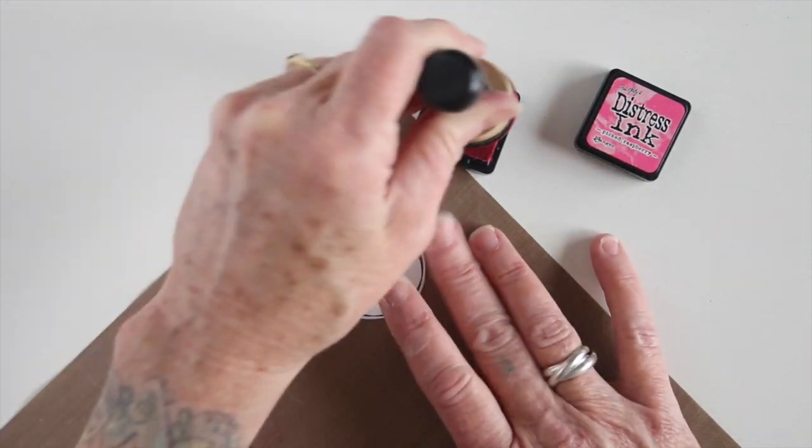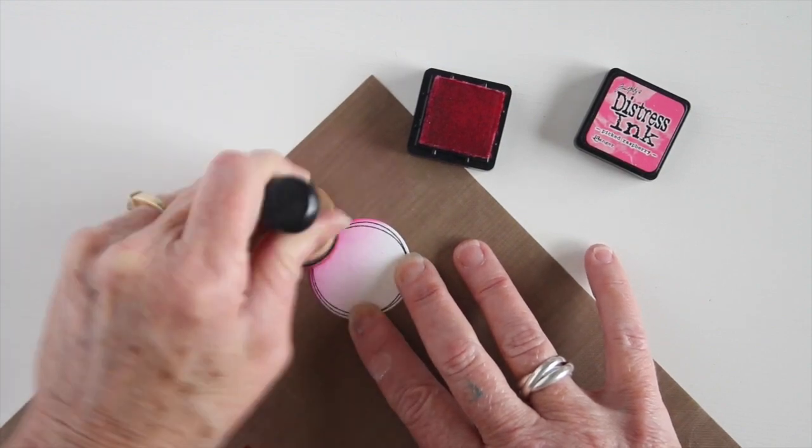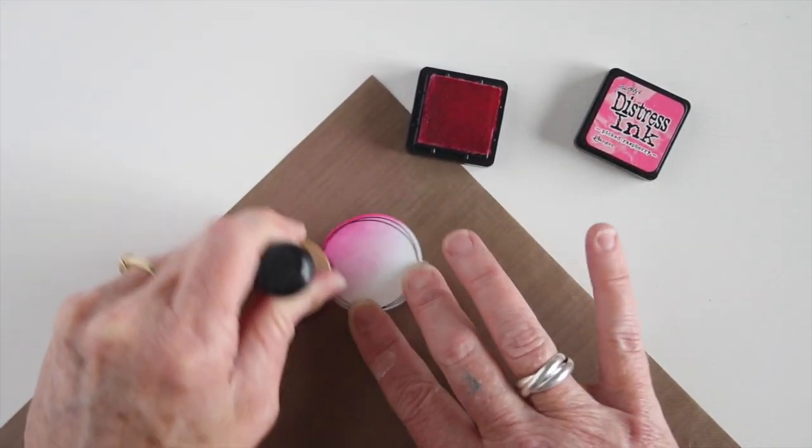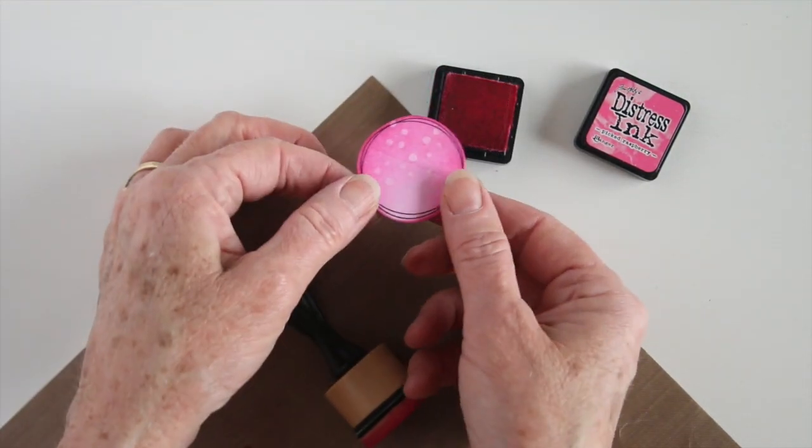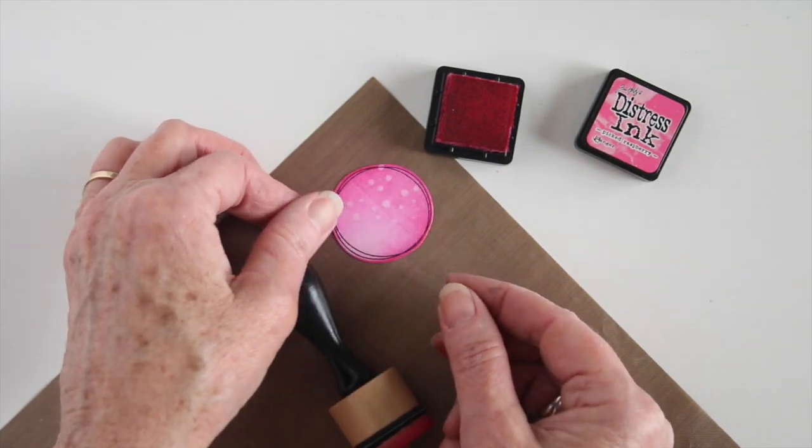So the gesso is going to pick up a little bit of the color but not too much and it'll just look like faded dots. So once I get a generous amount of ink on here you'll be able to start seeing the resist. And now you can see the dots from the stencil and it's a really nice soft resist.